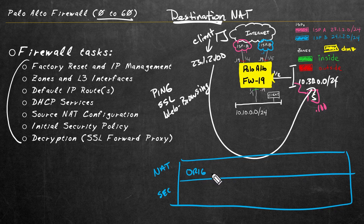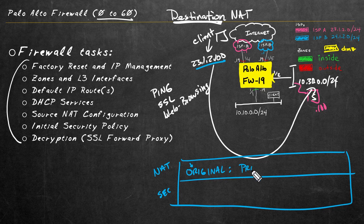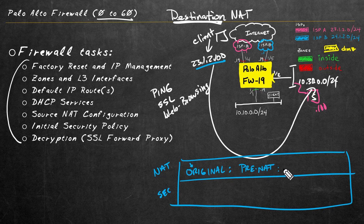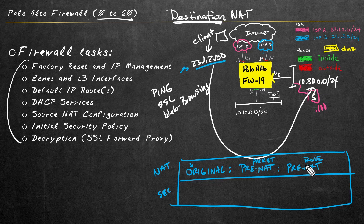Before we demo this configuration, I want to point out a couple of differences between the NAT policy doing the address translation and the security policy allowing the traffic through. In the NAT policy, on the original packet tab, we're talking about source packets and source information before any translation has occurred — so the globally routable address 23.1.2.100 and the client's IP address. From a routing perspective, all those addresses are associated with the outside zone. So in the NAT rule, regarding the original packet, we specify pre-NAT addresses and pre-NAT zones.